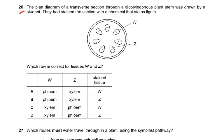Question number 26. The plan drawing of a transverse section through a dicot plant stem was drawn by a student. They had stained the section with a chemical that stains lignin. Which row is correct for the tissues W and Z? W is the phloem, Z is the xylem. And what will be the stained tissue? Because it stains lignin, the xylem will be stained. So Z will be stained. The answer was B — W was the phloem, Z was the xylem, and Z was the one that was stained.